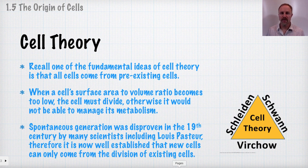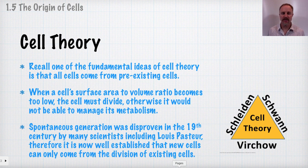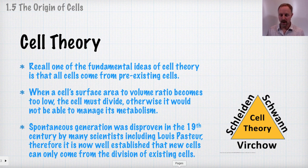One of the things to remember is that when a cell's surface area to volume ratio becomes too small — the cell is getting too large and can't manage its metabolism very well — it needs to divide. It does so by binary fission with bacteria or through mitosis with eukaryotic cells.